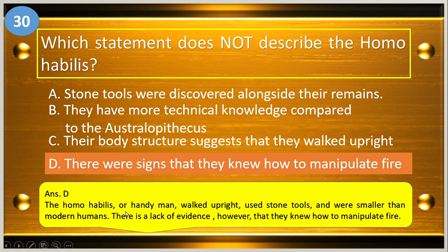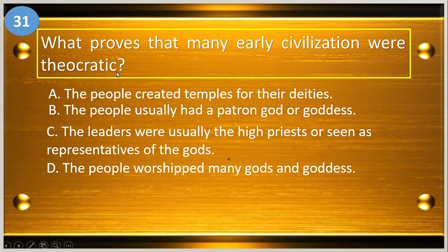The Homo habilis, or handyman, walked upright, used stone tools, and were smaller than modern humans. There is a lack of evidence, however, that they knew how to manipulate fire.